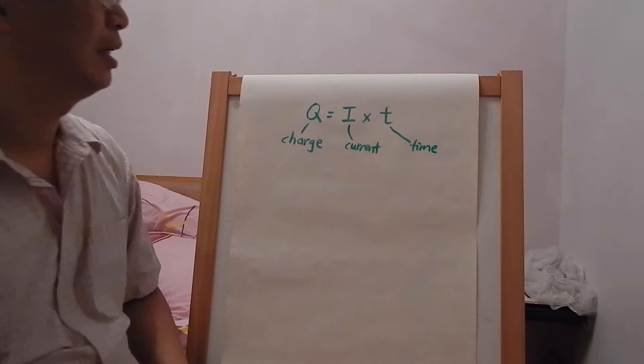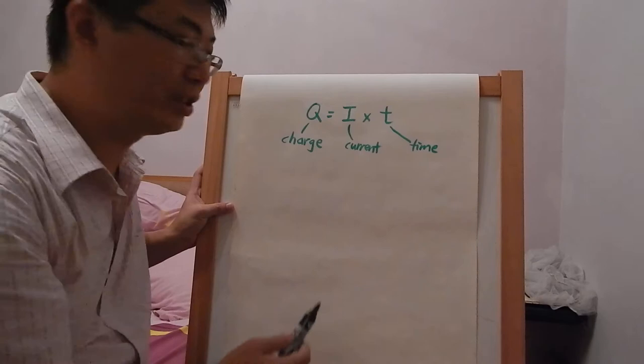If we rearrange this equation, I = Q divided by T, which is the definition for current: the rate of flow of charge.